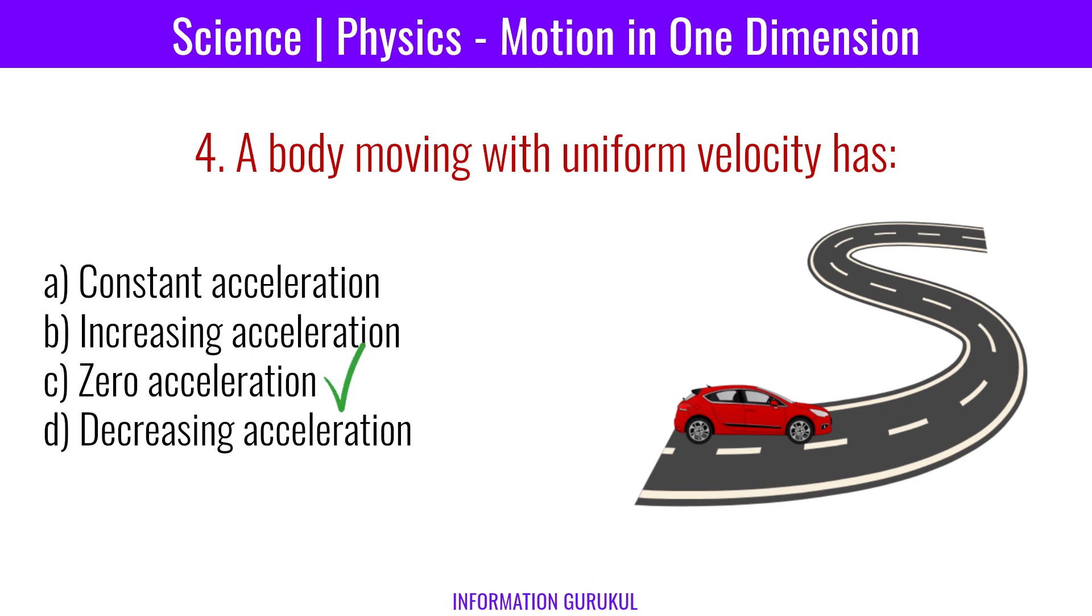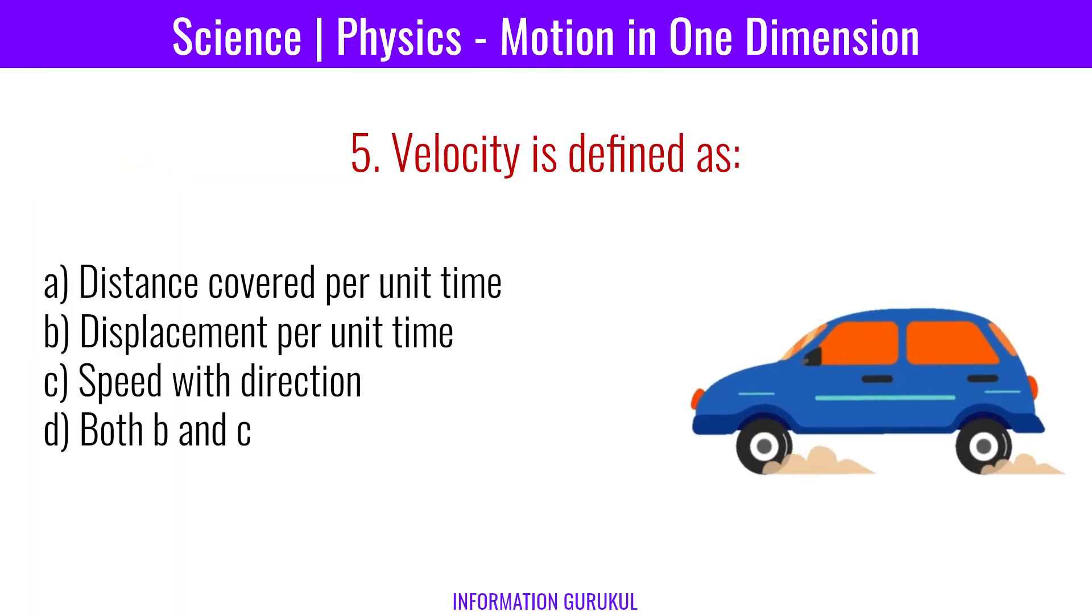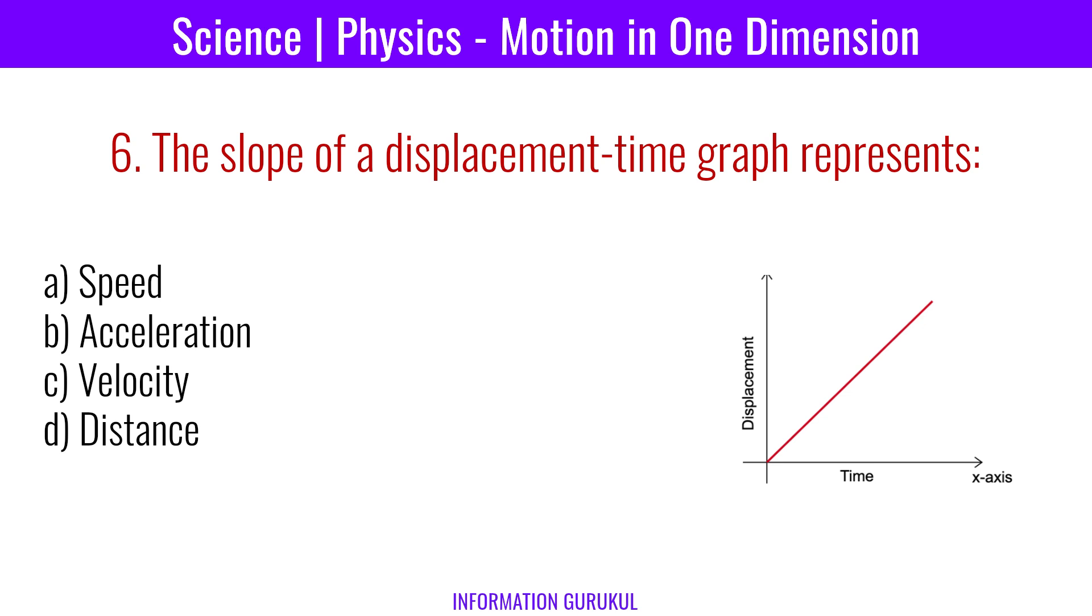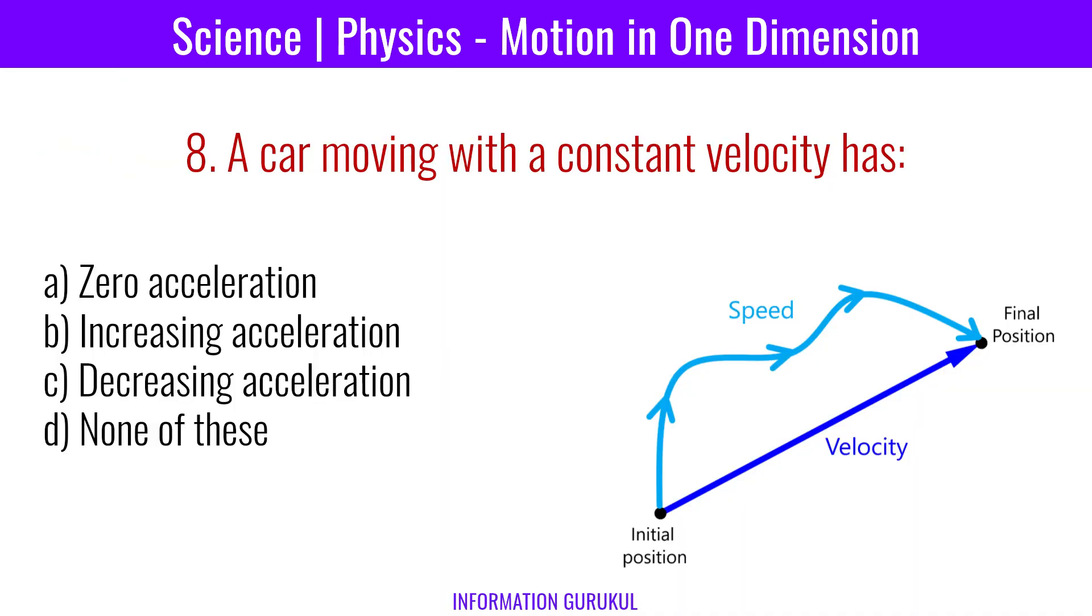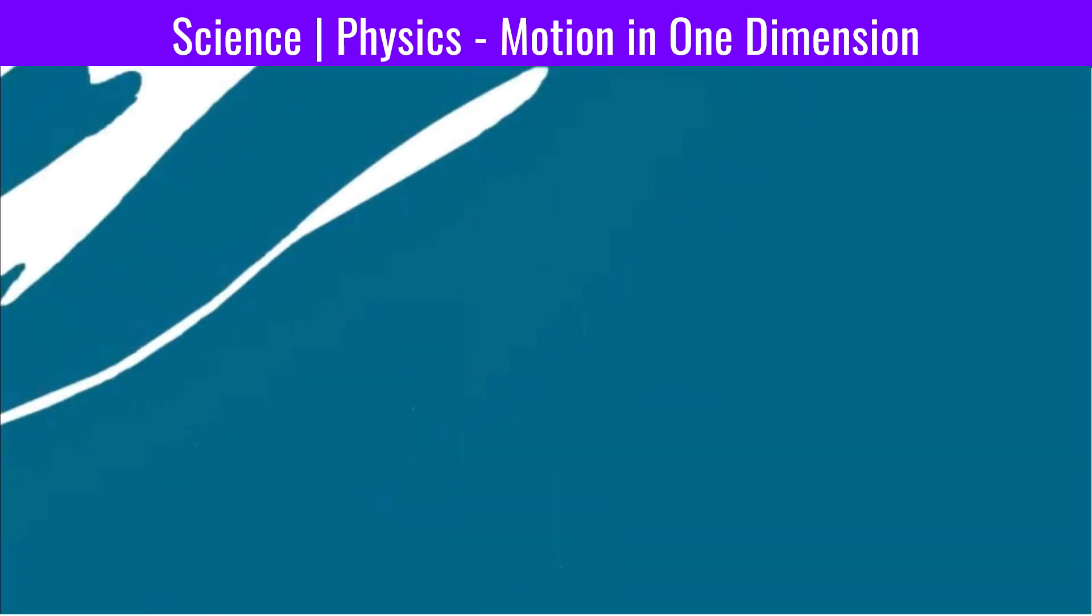Velocity is defined as both B and C. The slope of a displacement-time graph represents velocity. Acceleration is defined as rate of change of velocity. A car moving with a constant velocity has zero acceleration.